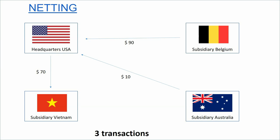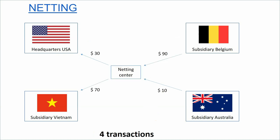This is a very simple netting system, but in reality these groups often work with a netting center, which takes care of all intergroup transactions. In that case, the Belgium subsidiary pays 90 million to the netting center, the Australian subsidiary pays 10 million to the netting center, and then the netting center pays 30 million to the headquarters and 70 million to the Vietnamese subsidiary.